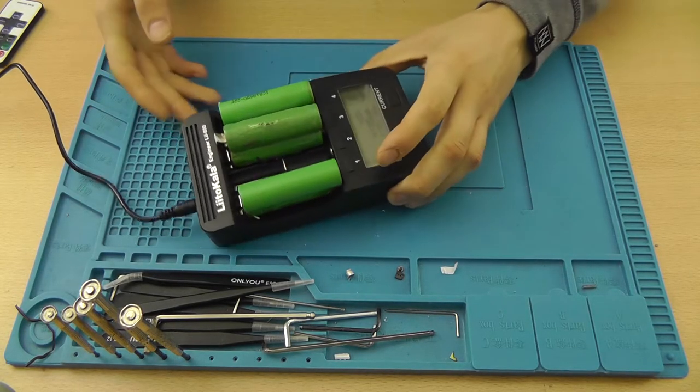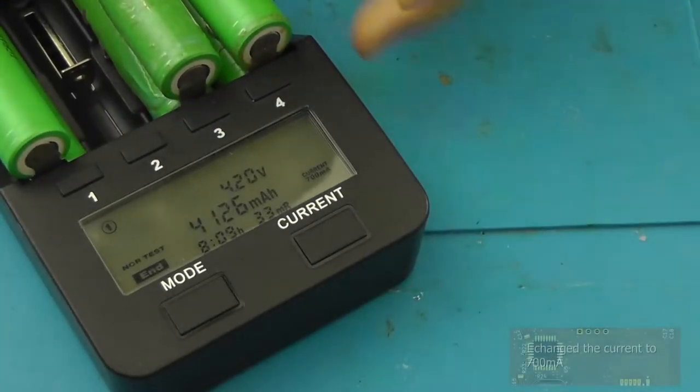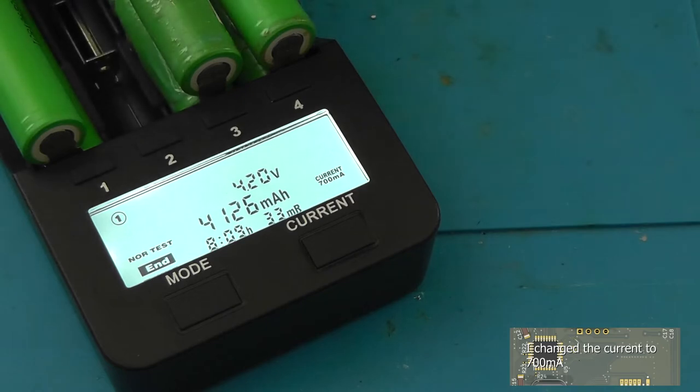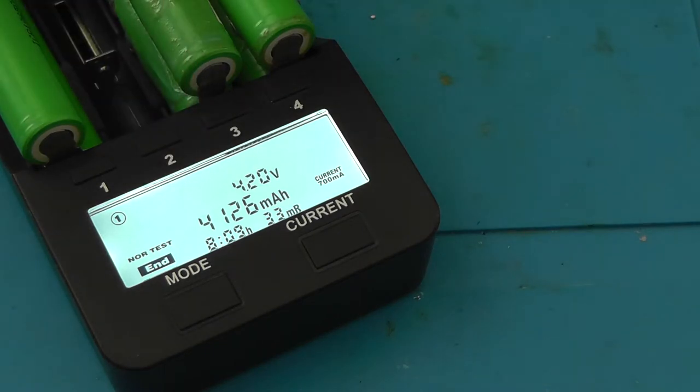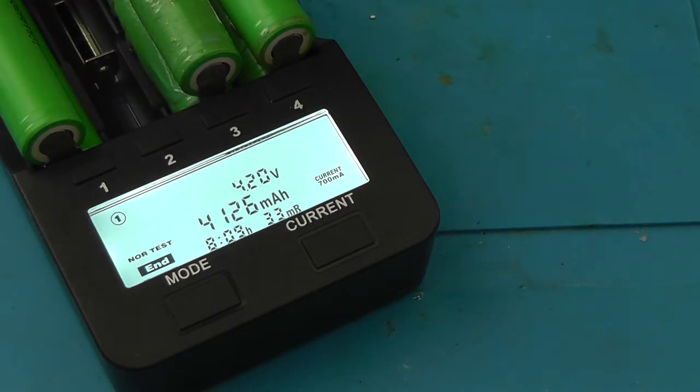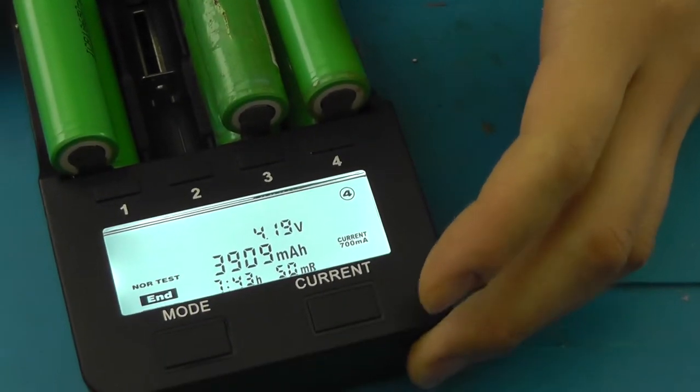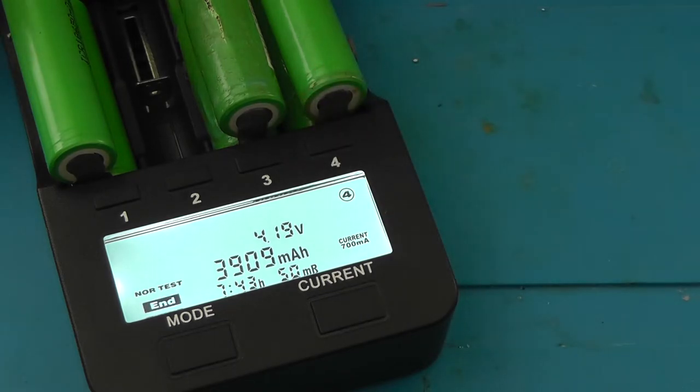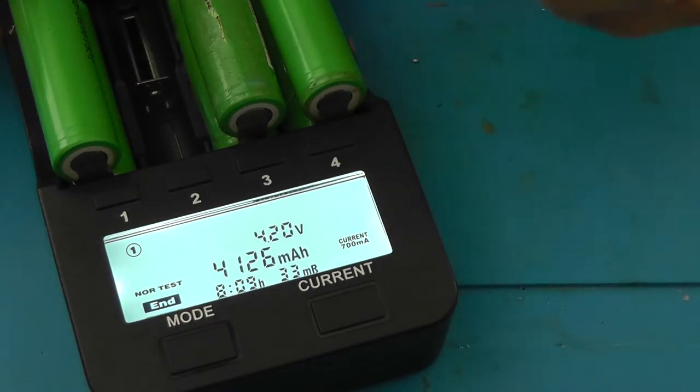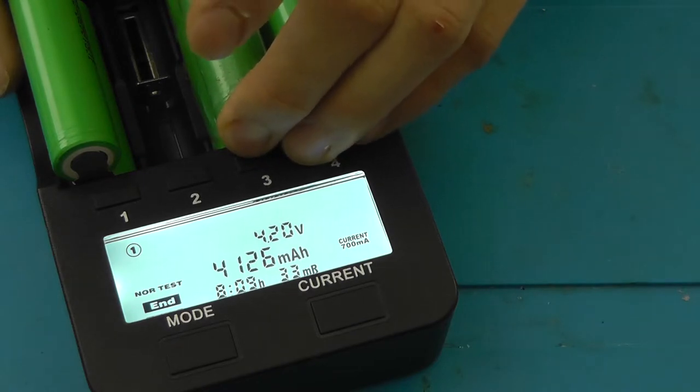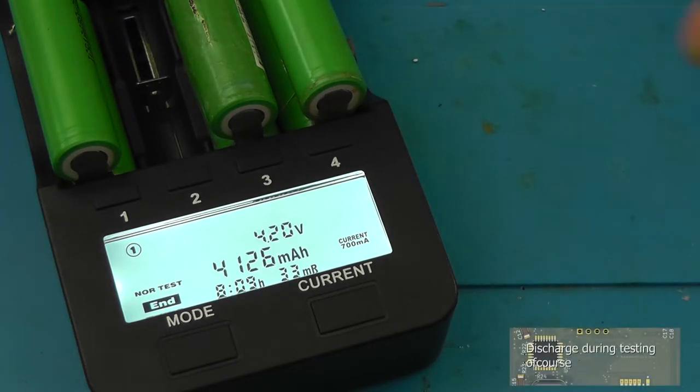So we're back. The charging has finished. As you're able to see, the first battery is actually pretty close to the original spec, which was 4200 milliamp hours. The first one is 4126 milliamp hours. This is just a joke. This one is a little bit less. I bumped the current up to 700 milliamps because it was taking forever. This one is most certainly the best of them all.